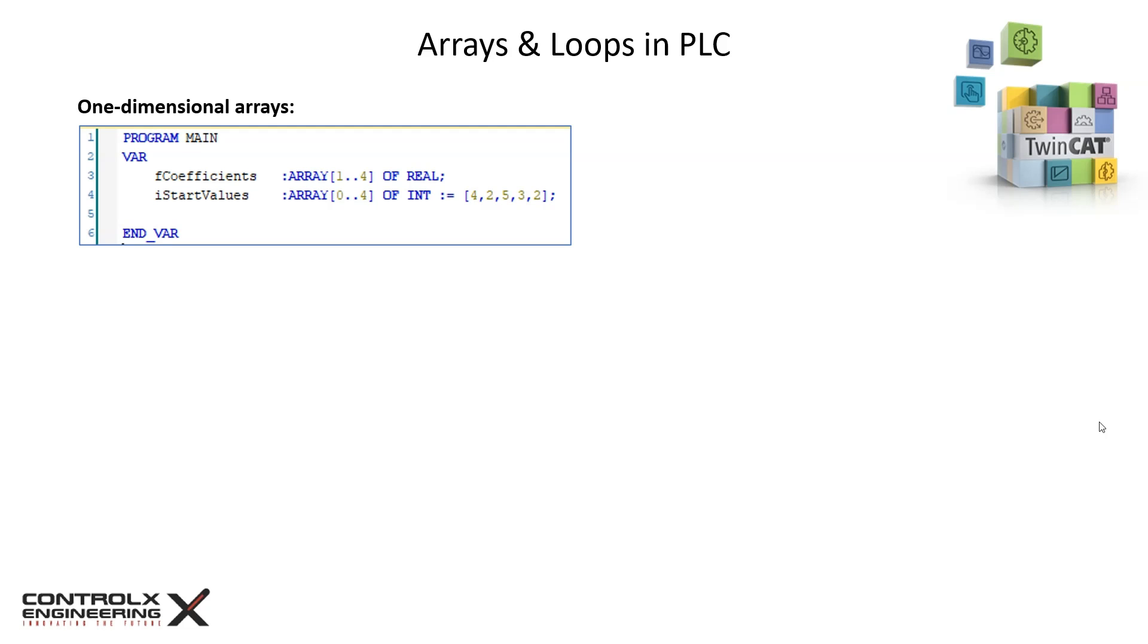Here's an example of a one-dimensional array. F coefficients is an array of real data type with lower index of 1 and upper index of 4. This gives us an array of four data elements.